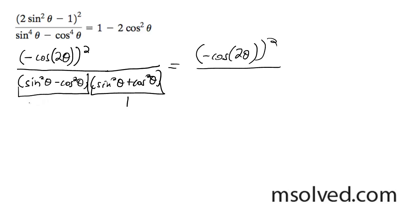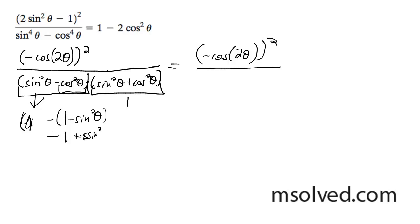What happens here is you convert the cosine into minus 1 minus sine squared theta; this becomes negative 1, and this becomes plus sine squared theta when you distribute that. So what you end up with is 2 sine squared theta minus 1, but then you pull out a negative, and you end up with 1 minus 2 sine squared theta, which is what we had on top.